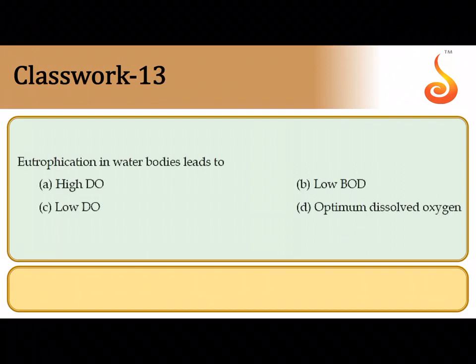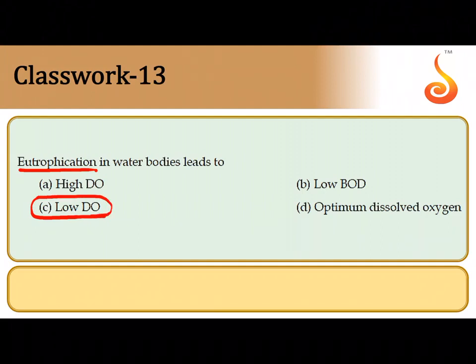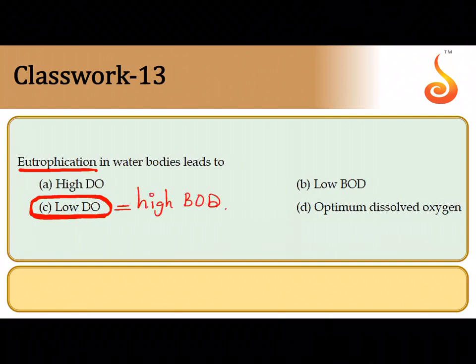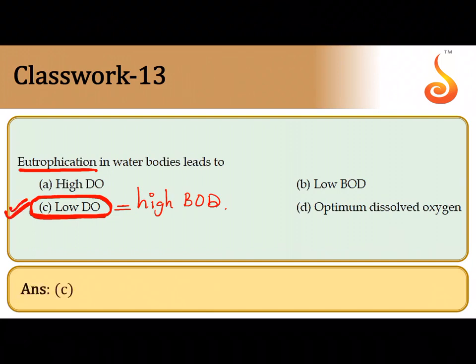The thirteenth question covers eutrophication — which means nutrient enrichment of water. The water gets enriched with nitrates and phosphates, causing a burgeoning growth of algae and plants, leading to low dissolved oxygen. All these plants compete with each other for dissolved oxygen, so the water body will have low dissolved oxygen, which is equivalent to a very high biochemical oxygen demand. The correct answer is option C.